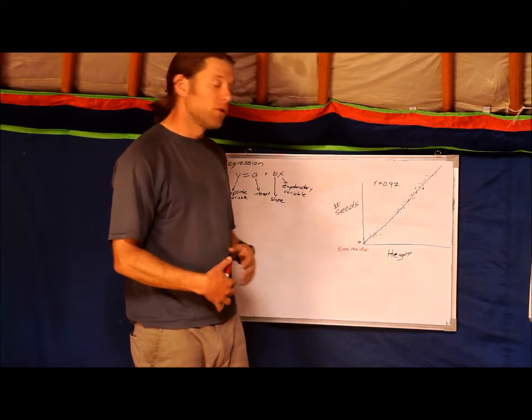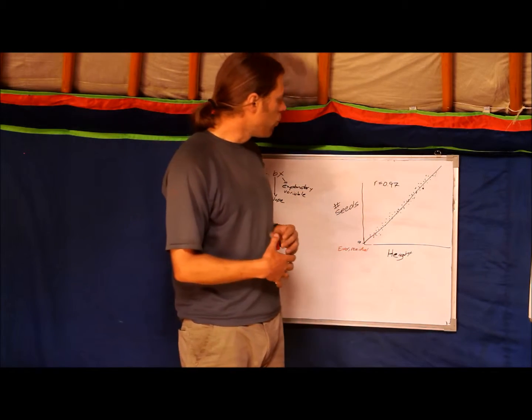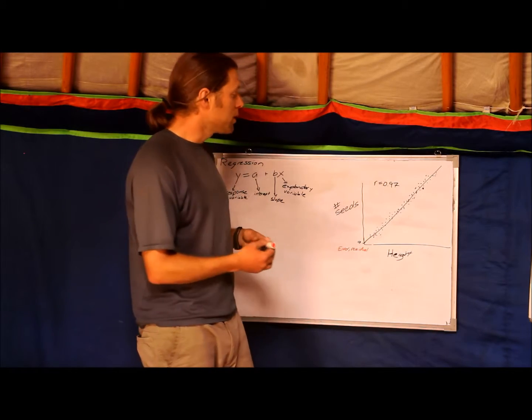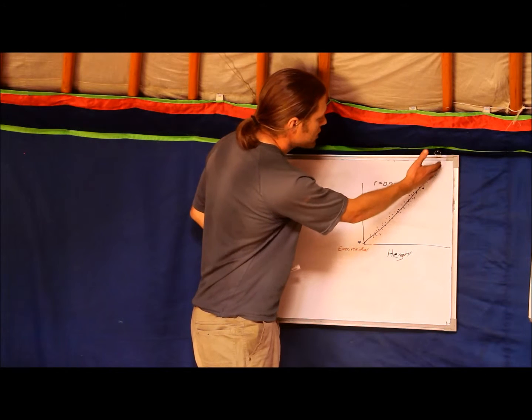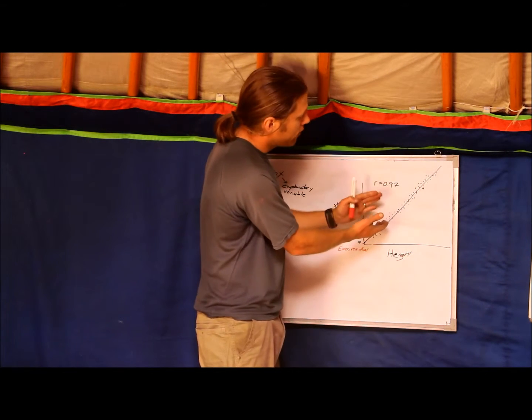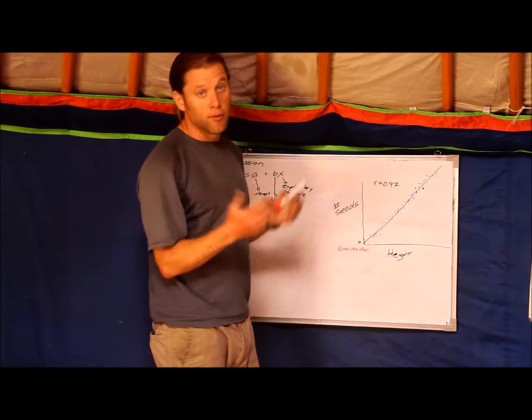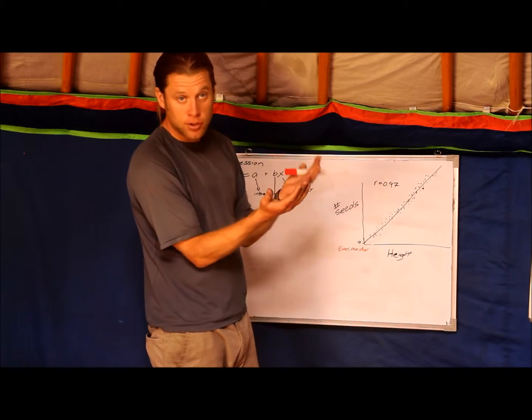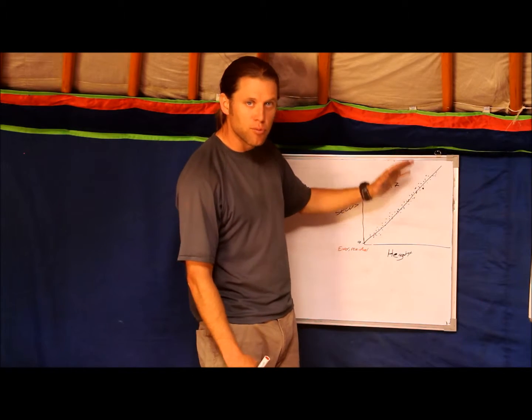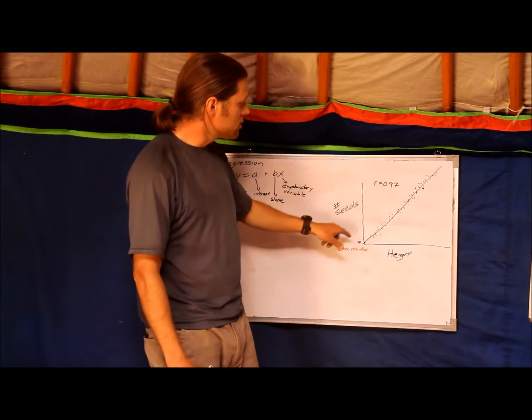There are several characteristics of residuals you need to be aware of. One is that they have an average of zero. That makes sense because the line should slice right through the middle of all your points. That means half of your error is above the line and half of your error is below the line. That means it all averages to zero. If you had more than half above zero, then you would have to move the line down.